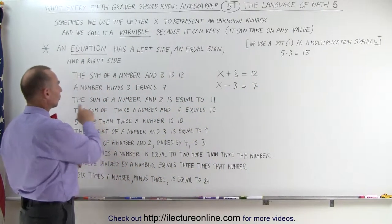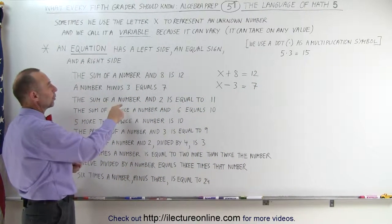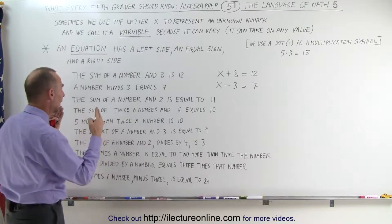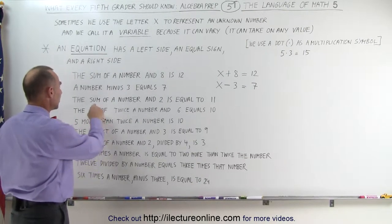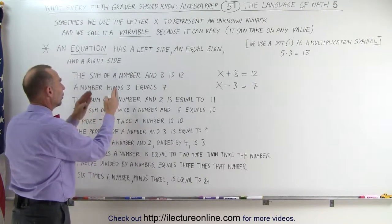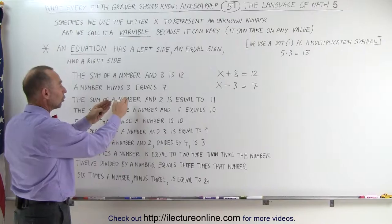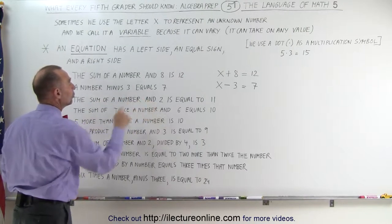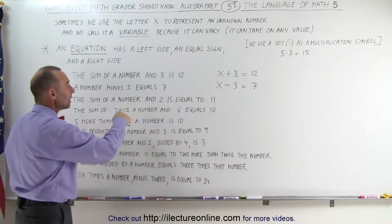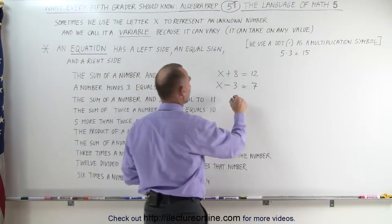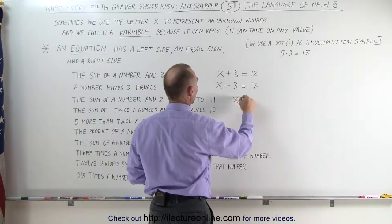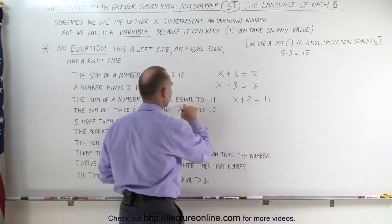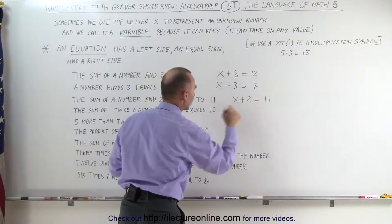The next sentence says: the sum of a number and 2 is equal to 11. 'Sum' means addition, so an unknown number represented by x, and we're going to add 2 to that — 'and' means addition. An unknown number plus 2 equals 11: x + 2 = 11.